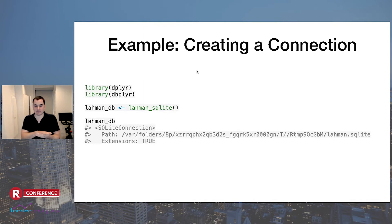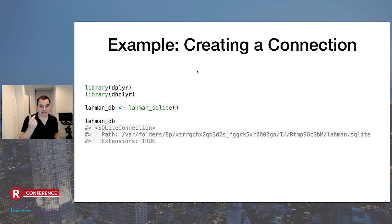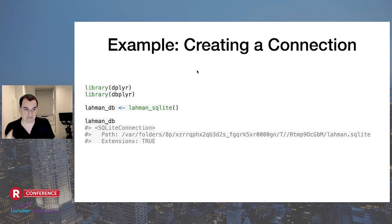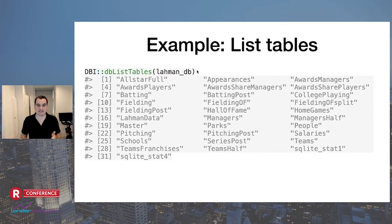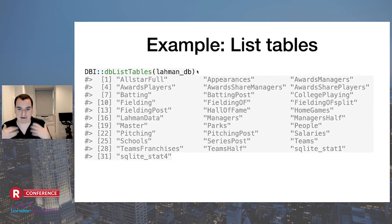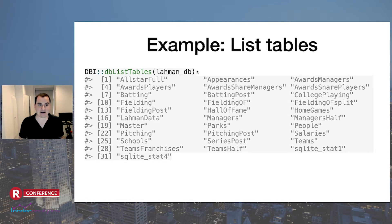There's a really good example if you want to play around with a database. dplyr provides the `lahman_sqlite()` function, which in one step creates a SQLite connection containing the Lahman baseball dataset. If I wanted to find out what tables are in it, I would use DBI's `dbListTables()`. Some of the things include data on batting, fielding, pitching, players' salaries, and some team-specific data.